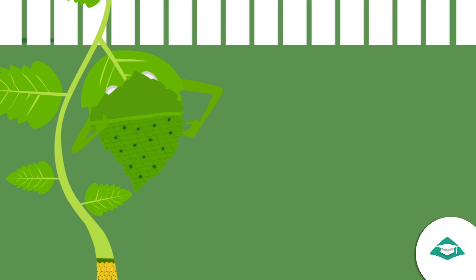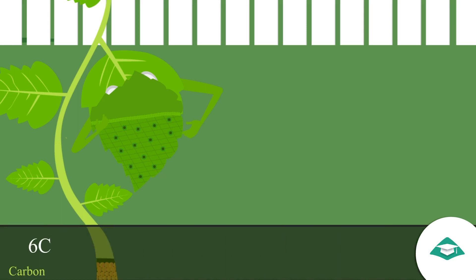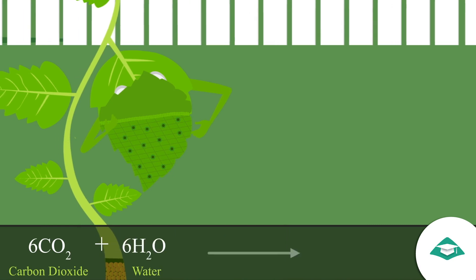Photosynthesis is the process in which plants prepare their own food with the help of carbon dioxide, water, chlorophyll, and sunlight.